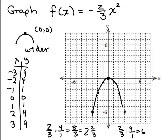Remember, f of x equals negative two thirds x squared and y equals negative two thirds x squared are both fine — one is written as a function notation, one uses x's and y's. Here's one more for you to try: graph f of x equals one fourth x squared. Get out graph paper, put the video on pause, and try that on your own.